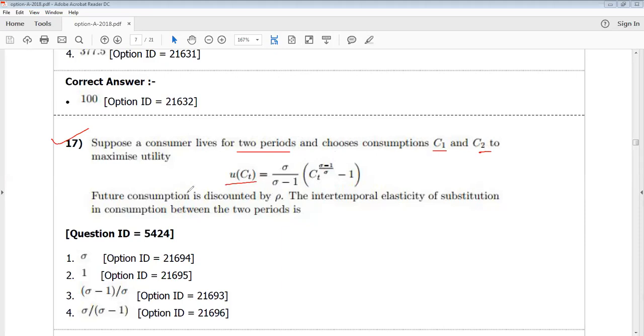Future consumption is discounted at rho, so can I say that the utility function is U(C1) plus rho times U(C2)? Future consumption is discounted at rho, so the future consumption is not as valuable as current consumption.